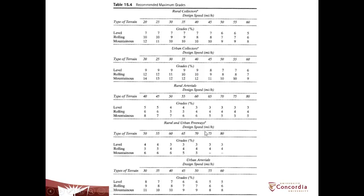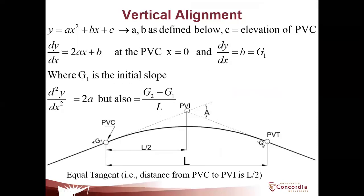If you are looking at a freeway — a controlled access facility — at maybe 55 miles per hour on mountain terrain, you cannot go more than six percent grade. These maximum grades depend on your speed, the type of road, and the type of terrain you are dealing with.